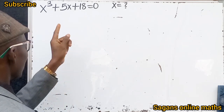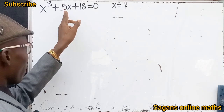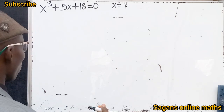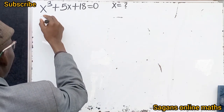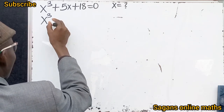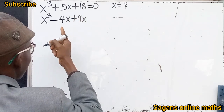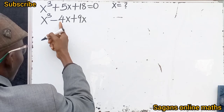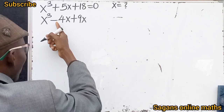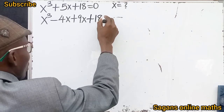Our first thing is to concentrate on this 5x. There is no way we can solve this if we don't find a way to factorize this 5x. What we are going to do is write 5x as minus 4x plus 9x. We know that 9 minus 4 gives us 5, so minus 4x plus 9x is 5x. Then plus 18, all this equals zero.